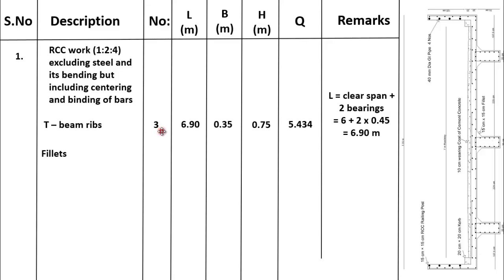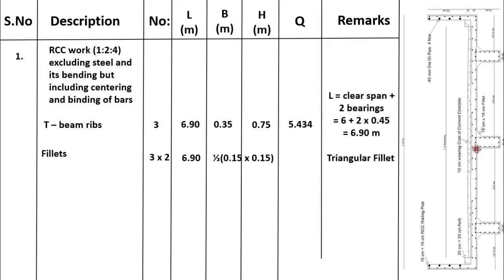Now we will calculate the quantities of material for each fillet. The number of fillets will be 3 multiplied by 2, because there are 3 beams and one fillet is provided on each side of each beam, giving a total of 6 fillets. The length of the fillet will also be equal to the length of the T-beam, which is 6.90 metres. It is a triangular fillet, and the cross-sectional area of a triangle is 1/2 times breadth multiplied by height. So 1/2 × 0.15 × 0.15 gives the cross-sectional area of each fillet. After multiplying all quantities, the total quantity of RCC work for fillets is 0.466 cubic metres.